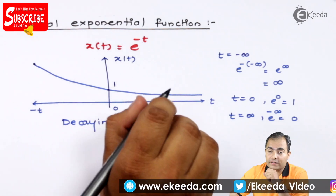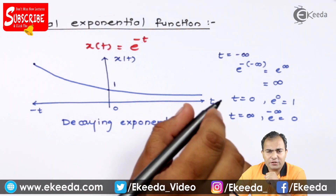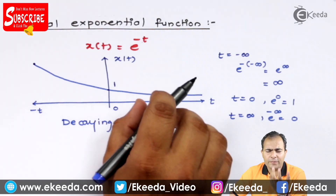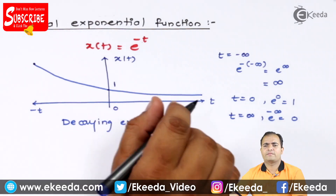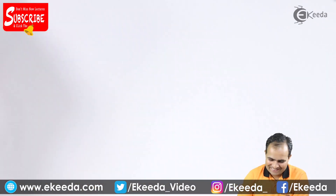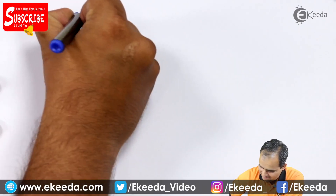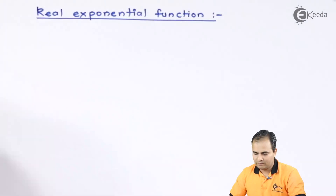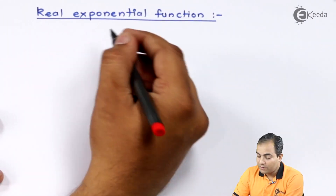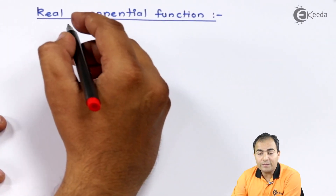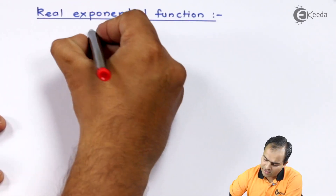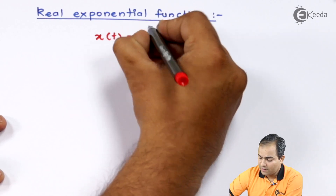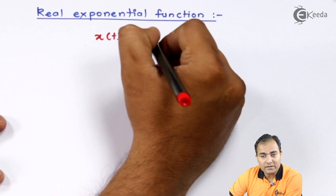One more plot is there which is the rising exponential. The next type is the rising function. For the rising function, I will take x(t) = e to the power plus t. Plus t means the sign of t is positive.